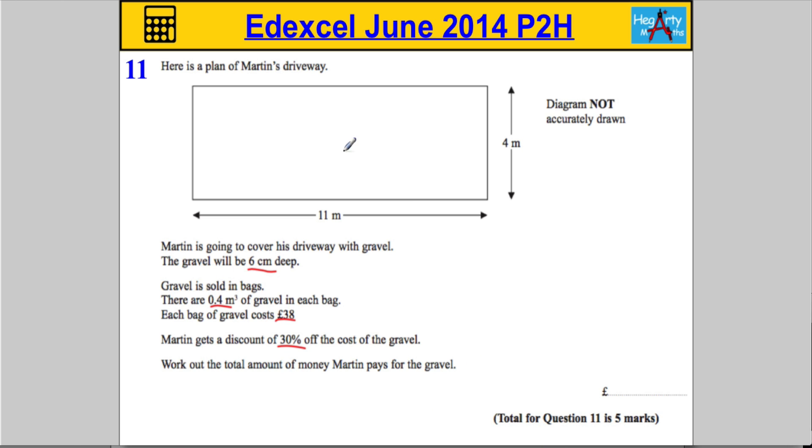Back up to the top here. It says it's a plan, so what it's telling you is if you were a bird flying over his driveway, this is what you would see. You only just see the top of it, you don't see how deep it is, but it actually tells us here that it's six centimeters deep.